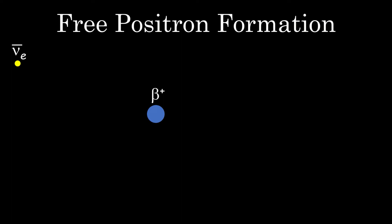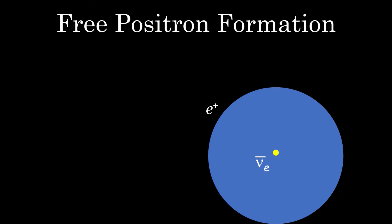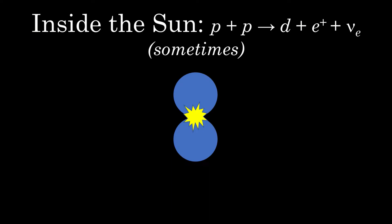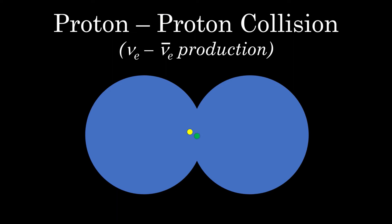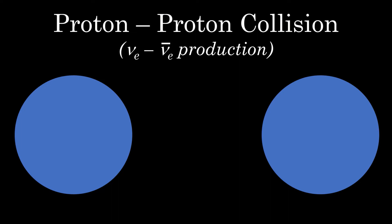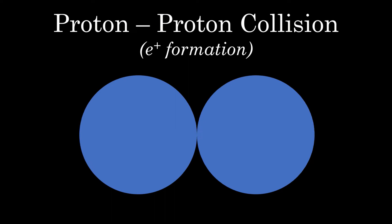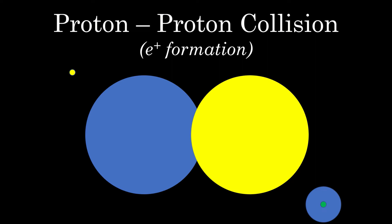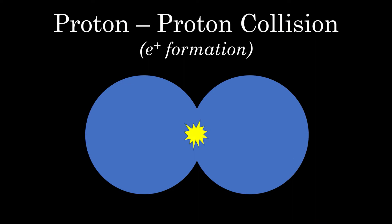For the free positron to form, a beta positron must couple with an electron anti-neutrino. Since an electron neutrino is also emitted during the deuteron formation, it appears that the collision of the two protons produces an electron neutrino-anti-neutrino pair. The neutrino-pair production apparently occurs when two protons with enough combined energy collide. A beta positron captures the anti-neutrino, forming the free positron that is emitted, and the neutrino exits the nucleus seemingly unaccosted.